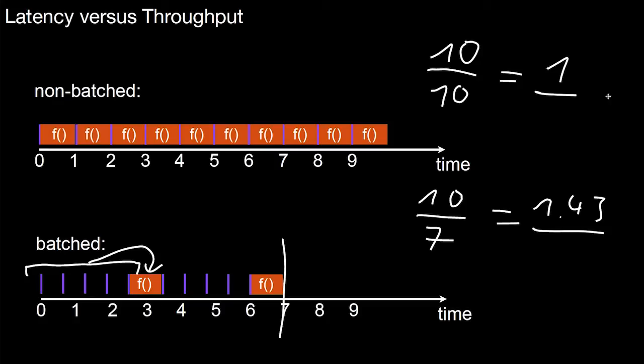So what is the latency? Here you see, once the element comes in, here you have the result and can return it. So the maximum latency here is one time unit. In contrast, in the batch case, you see this element comes in, it's just collected.